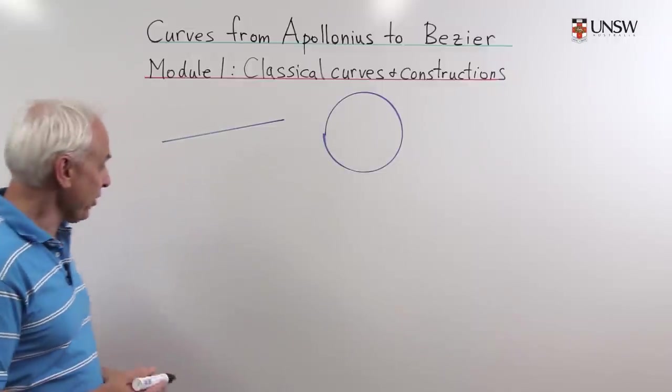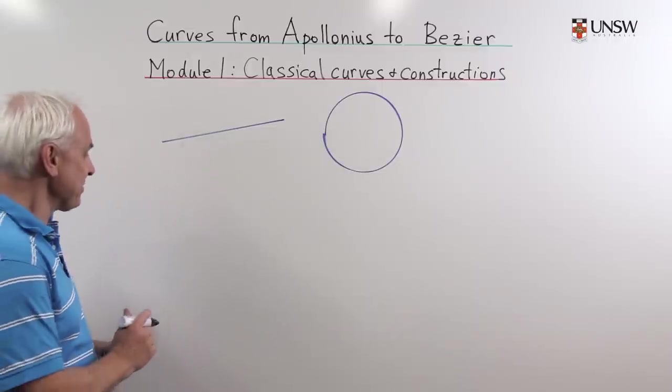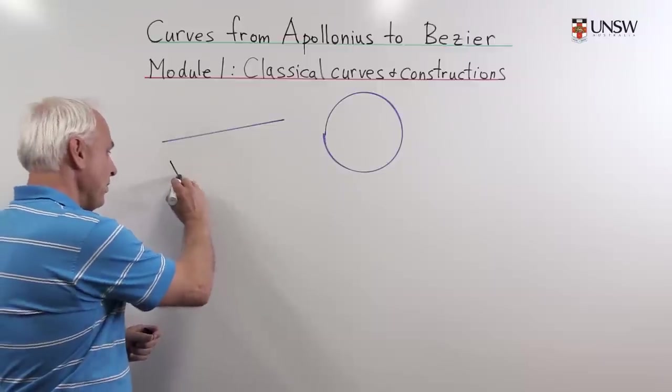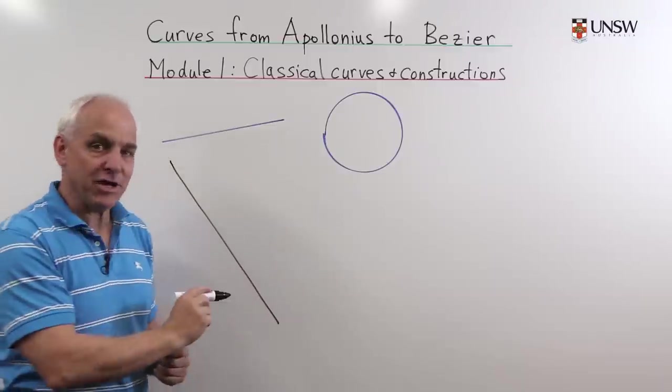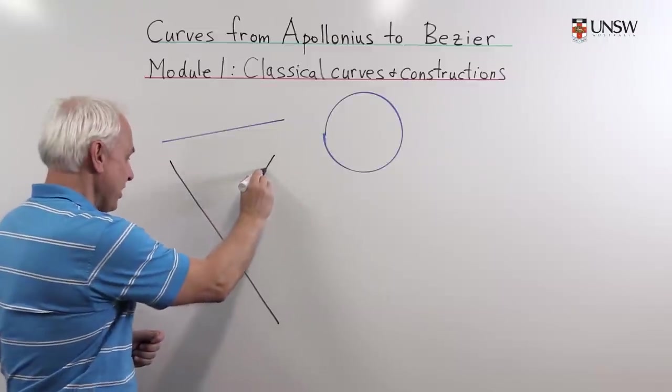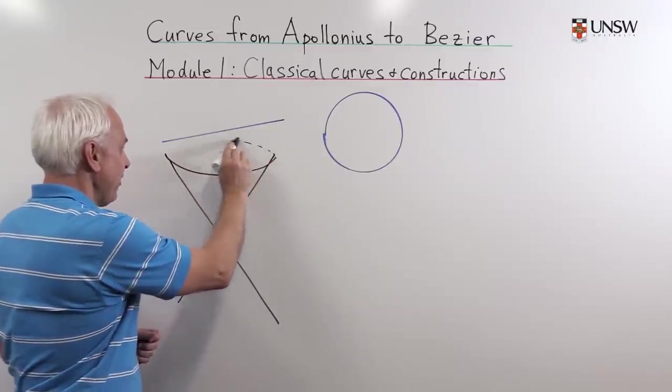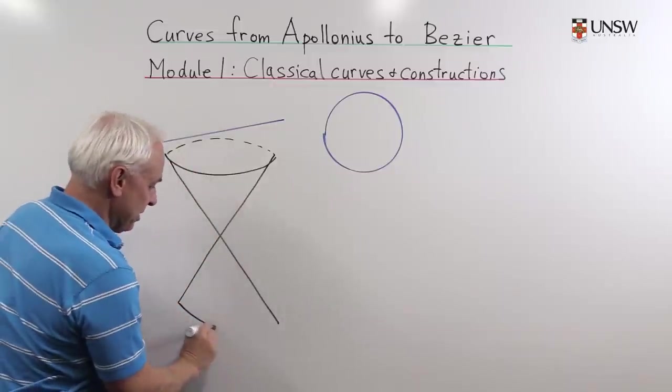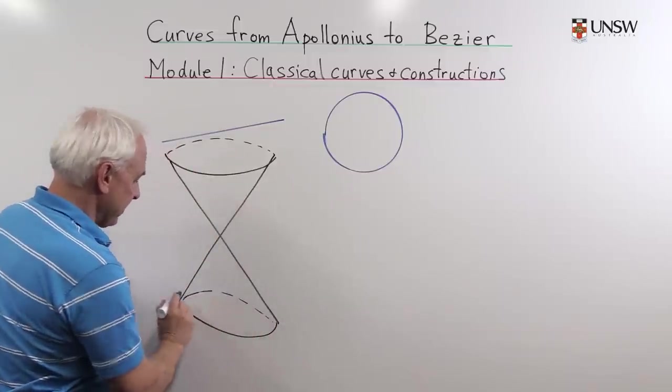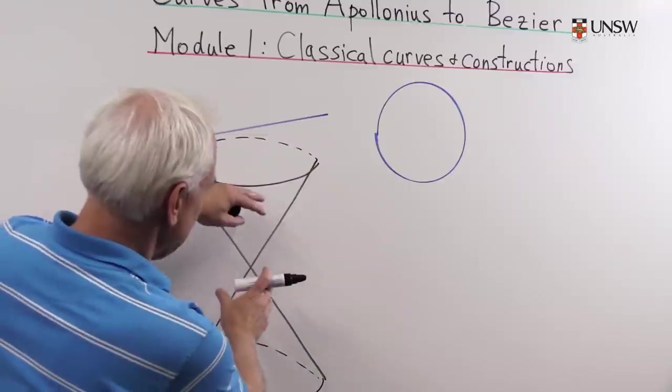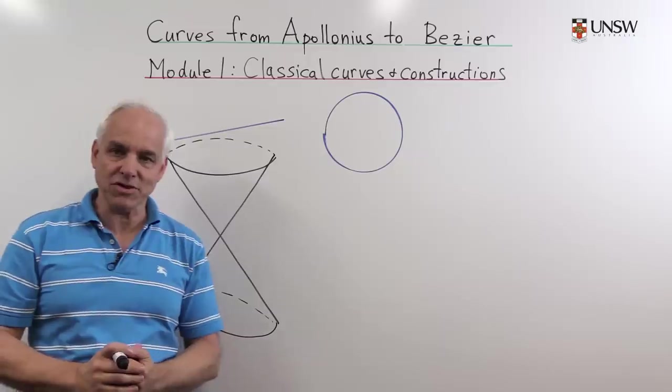In particular they studied the so-called conic sections which arise when we look at combining the circle and the line to form a three-dimensional cone. So here is a cone like an ice cream cone, but as Apollonius realized it's good to consider the top and the bottom of this cone.